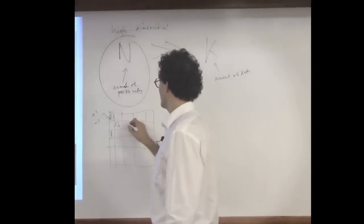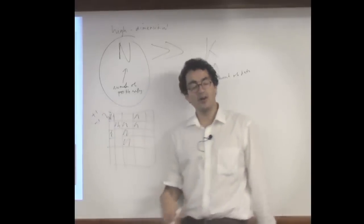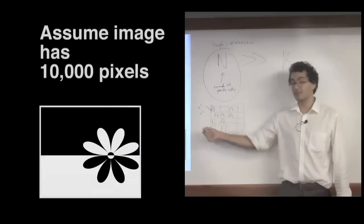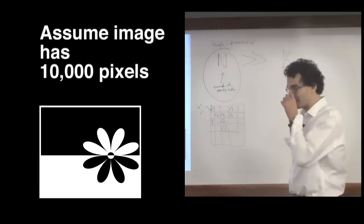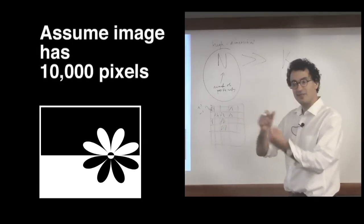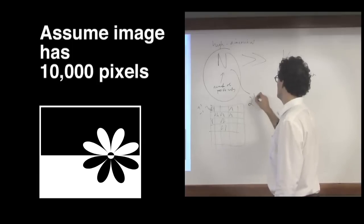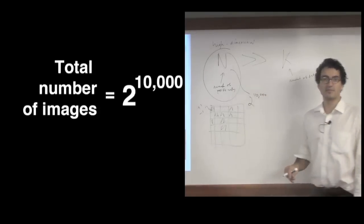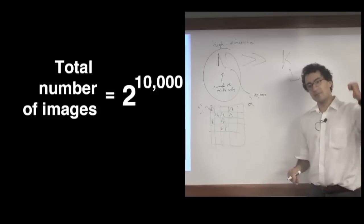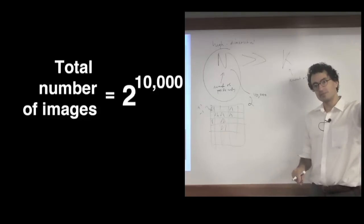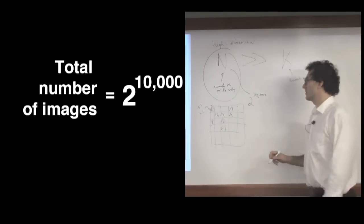And so any image here can have any arbitrary combination of pixel values. If there's 10,000 pixels, and each pixel can either be plus one or minus one, then the total number of images is 2 to the power of 10,000. Each pixel has a discrete dimension, plus one and minus one, and there's 10,000 of them.